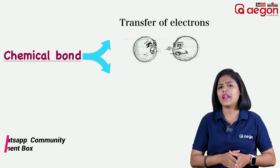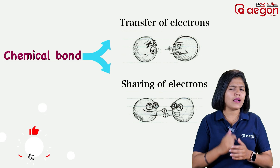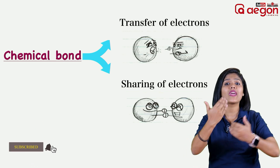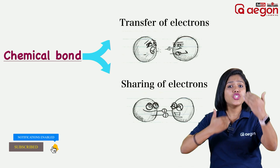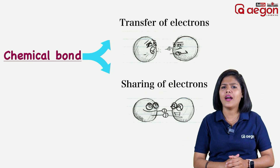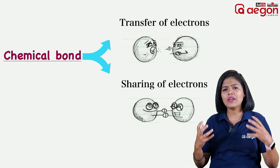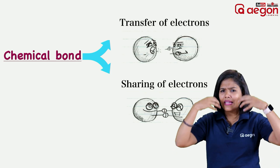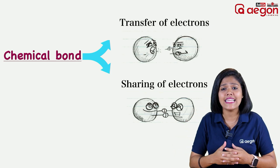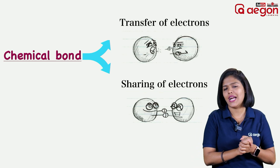When there is a transfer of electrons between atoms, we call that an ionic bond. In the case of carbon, electrons are shared. Sharing of electrons — what type of bond is that? Covalent bond. To create a chemical bond, we study stability. This is the second chapter of the standard.